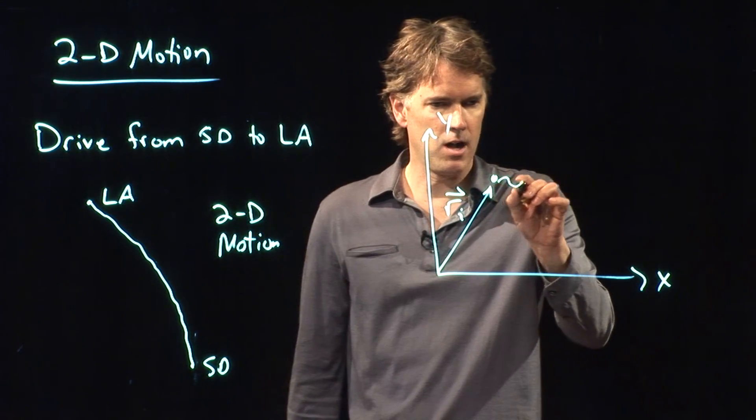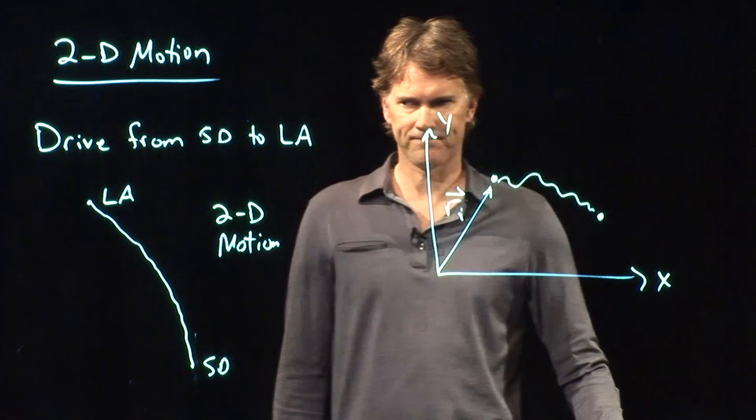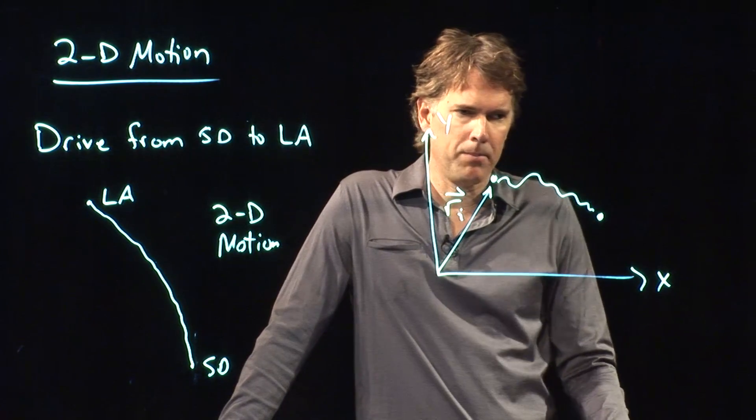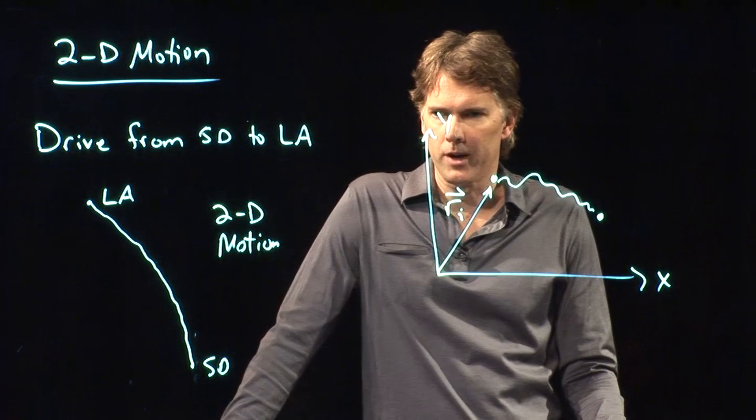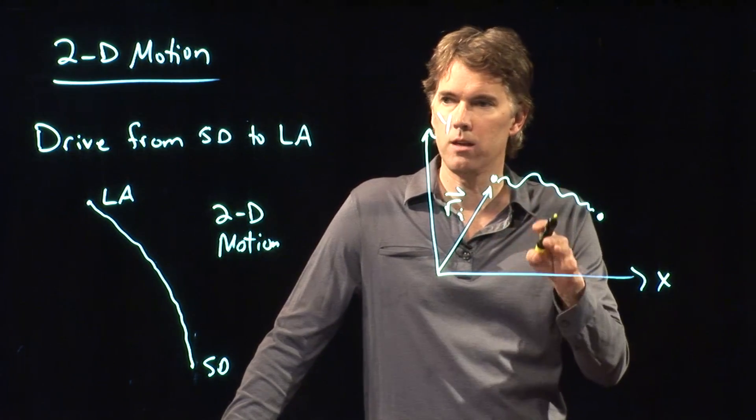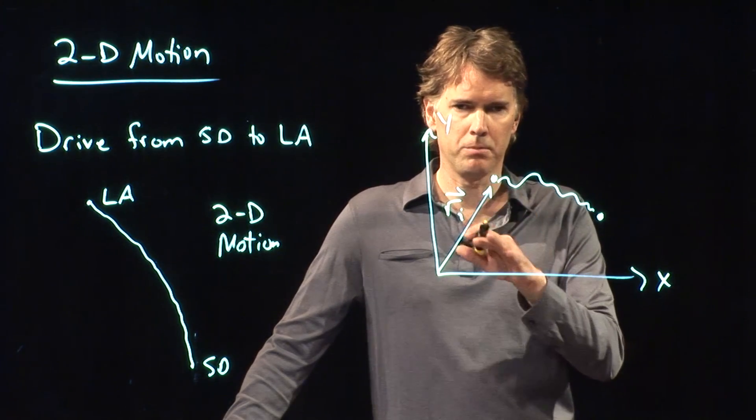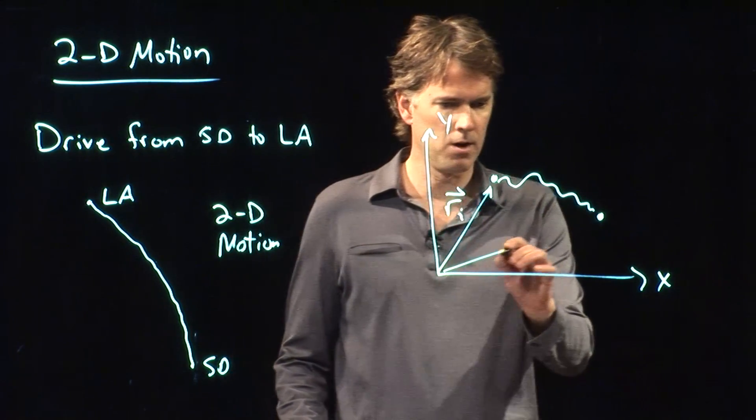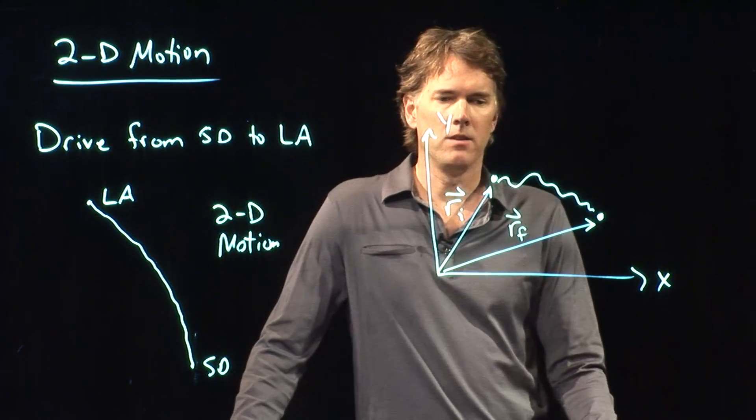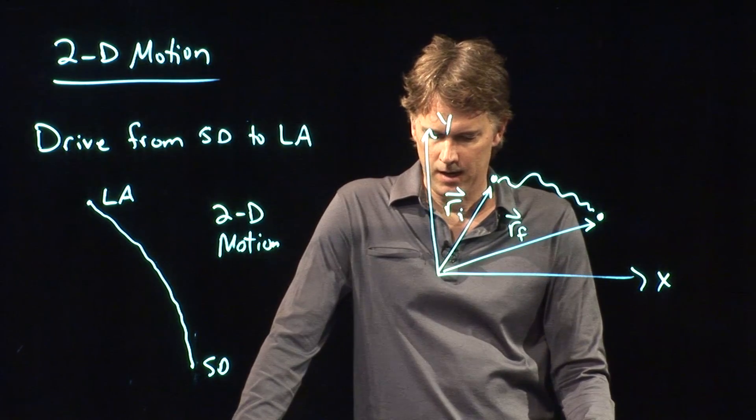Now, let's say I follow some complicated trajectory and I end up over there. Do I have to worry about that path? Well, it depends on what you mean by worry. If we're worried about how much energy you exerted due to friction along the way, then yes, you do have to worry about that. But if you're just worried about the displacement, then you don't. We draw our final vector, RF, and that describes the position of our final location.